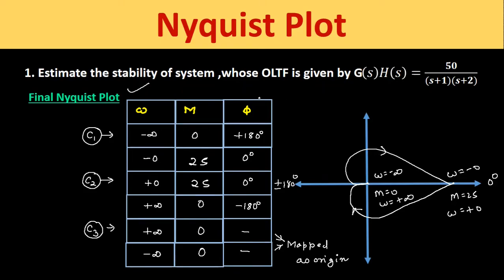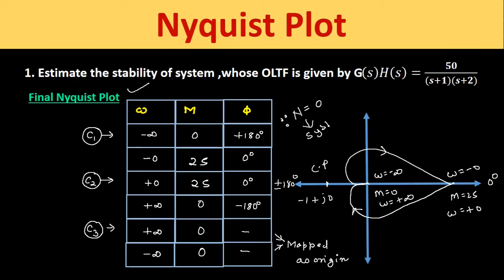We mark the critical point −1 + j0 on the Nyquist plot. We can see that this Nyquist plot does not cover the negative real axis and therefore does not encircle the critical point. Since the number of encirclements of the critical point is equal to 0, the system is said to be a stable system. Hope you have understood the topic. Thank you for watching and please subscribe to the channel for more updates.